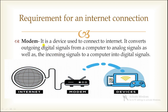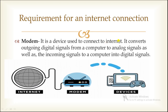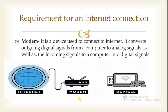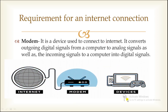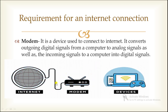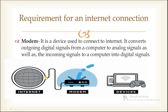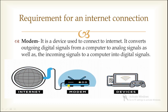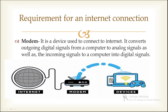Next is modem, which is also called a connection device. It is used to connect to internet. As you can see in the picture, here we have the modem, which is connecting internet with the devices. Modem is used to convert the analog signal — the signal which is coming from the line to the modem — that is analog signal.